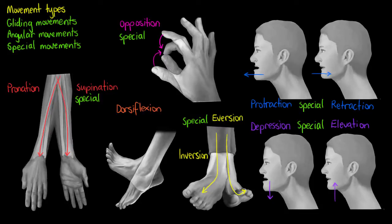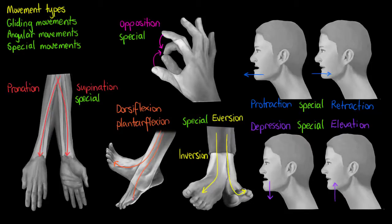The last two special movements are dorsiflexion and plantar flexion. Dorsiflexion is lifting our foot straight upward toward our shin, as if we were trying to get our toes to touch our shin. Plantar flexion is the opposite — pointing our foot downward, as gymnasts and dancers often do. Both are special movement types.